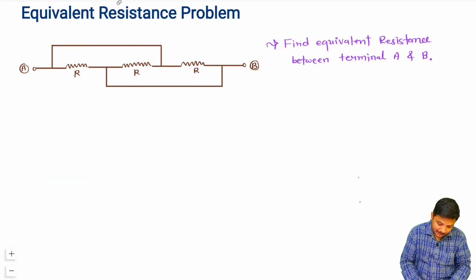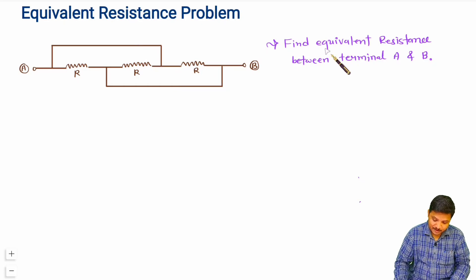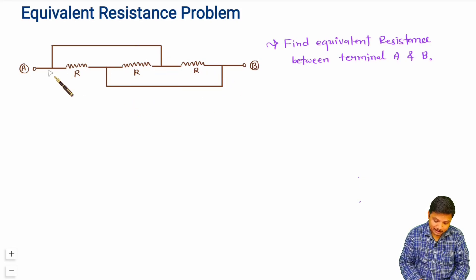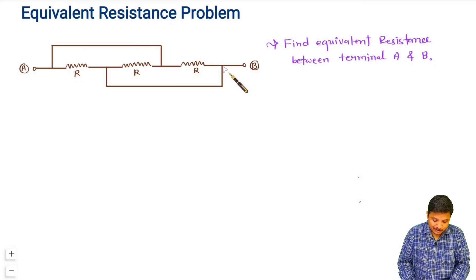We are having an electrical network in which three resistors R are connected, and we are required to find the equivalent resistance between terminals A and B. Whenever you have any electrical network, your first agenda should be to identify series and parallel connections. Here, because of the wire connections, I cannot say these three resistors are in series. So I need to redraw this circuit to see if we can get a simplified form.